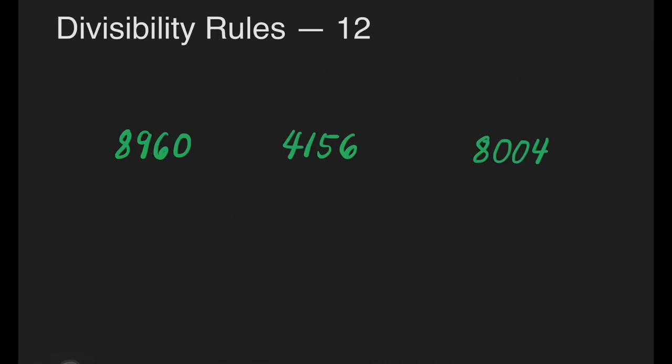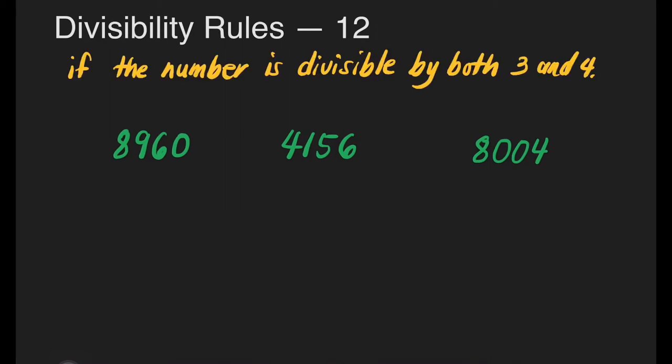Let us now have divisibility rules for 12. How will we know that a number is divisible by 12? Which of these numbers is divisible by 12? A number is divisible by 12 if it is divisible by both 3 and 4. Let's recap: a number is divisible by 3 when you add the digits and the sum is divisible by 3. For 4, if the last 2 digits end with 2 zeros or are divisible by 4, then that number is divisible by 4.